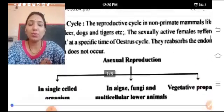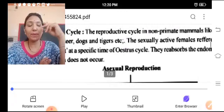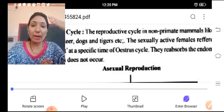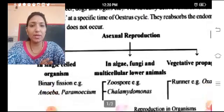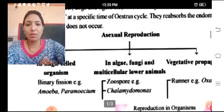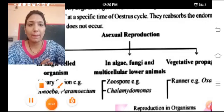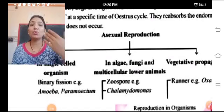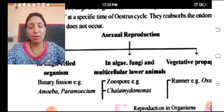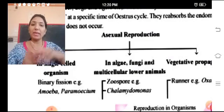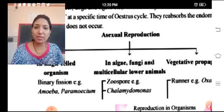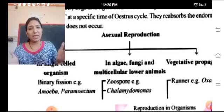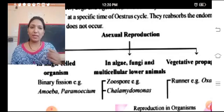Reproduction is of two types: sexual and asexual reproduction. In asexual reproduction, only one parent participates. If we talk about binary fission in single-celled organisms — we call them unicellular organisms, like Amoeba and Paramecium — the mode of asexual reproduction is binary fission, where the organism divides into two equal halves, resulting in the development of two new cells. This is called binary fission.